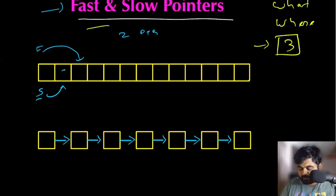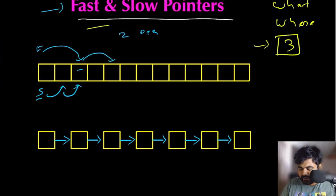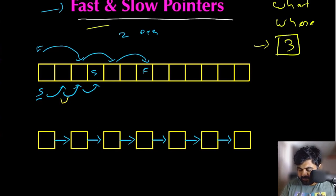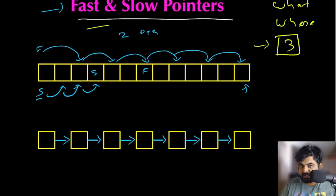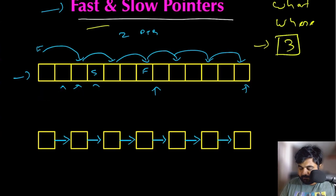In the first iteration, the slow pointer comes to position one while the fast pointer jumps two positions. In the next iteration, the slow pointer moves one more step while the fast pointer moves two more. With every iteration, the difference between the slow and fast pointer keeps increasing. Eventually, the fast pointer reaches the end of the array while the slow pointer is somewhere in the middle — and that gives us important information.